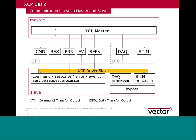There are two kinds of communication between master and slave. The first is CTO — Command Transfer Object — used to send commands from the master and receive responses from the slave. The second is DTO — Data Transfer Object — which can carry data from the slave to the master (data acquisition) or from the master to the slave (stimulation). Together, DAQ and stimulation realize the bypass functionality.